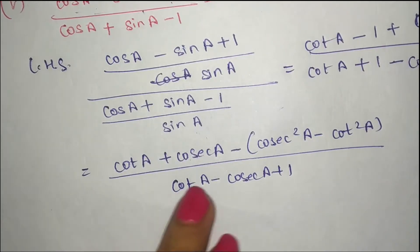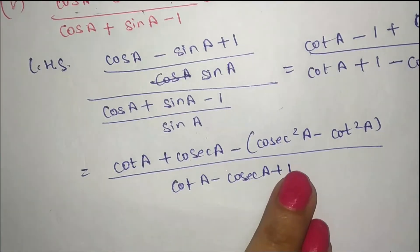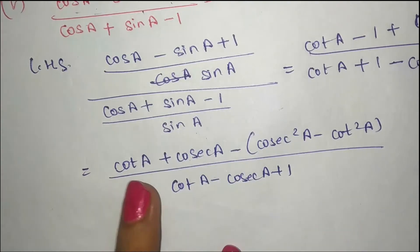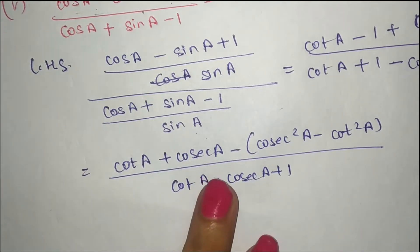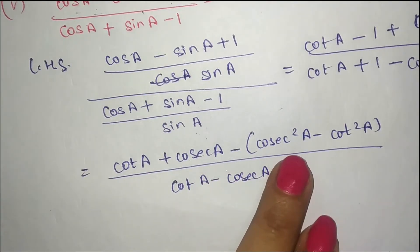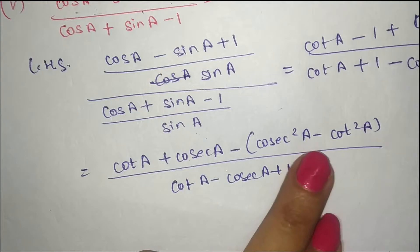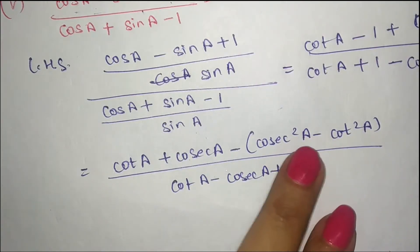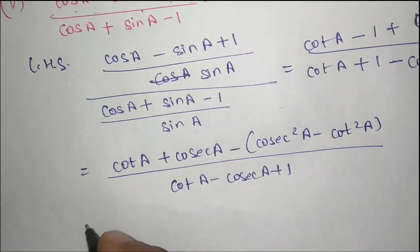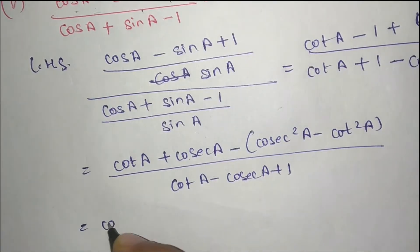Now we have put the values in. After that, look at cot a plus sec a, and this involves sec²a minus cot²a. Here we apply the a² minus b² identity first and expand it, then see what is common.